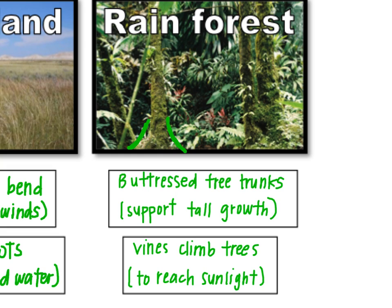Sometimes you'll see vines growing on trees. There are vines growing up the tree trunk, and what that allows them to do is reach the top of the canopy as well. The vines don't have a strong enough stem to grow tall themselves, but they can climb the trunk of the tree to get to the sunlight.